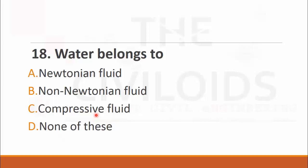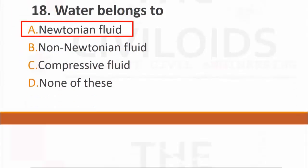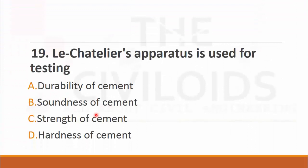MCQ number nineteen: Le Chatelier's apparatus is used for testing. The choices are: A. durability of cement, B. soundness of cement, C. strength of cement, and D. hardness of cement. Le Chatelier's apparatus is used for determination of soundness of cement. Soundness of cement means the ability of cement to resist volume changes. The right choice is B. soundness of cement.